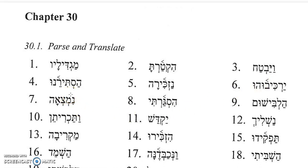Number four, Hastirenu. Here you have a Hay with a Patah under it, so that looks like it would be possibly a Hifial imperative. The Anu at the end would be an object suffix, first common plural, and it would be a command — hide us — speaking to a male individual. Alternatively, Hastire could be seen as an infinitive construct with a first common singular suffix on it, meaning something like my hiding.